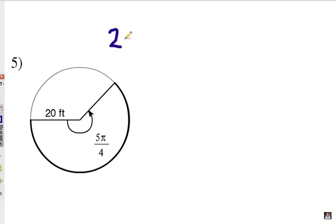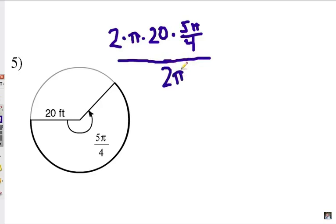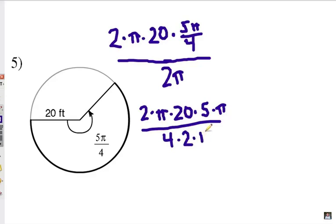So do the circumference. 2 times π times the radius of 20. Multiply by 5π over 4. Divide the whole thing by 2π. Alright, let's think of it another way. That's 2 times π times 20 times 5 times π. The 4 can be bumped down into the denominator with the 2 and the π.